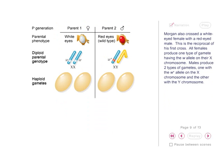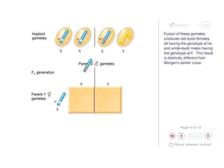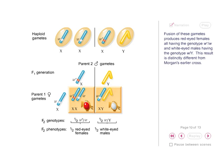Morgan also crossed a white-eyed female with a red-eyed male. This is the reciprocal of his first cross. All females produce one type of gamete having the W allele on their X chromosome. Males produce two types of gametes: one with the W+ allele on the X chromosome, and the other with the Y chromosome. Fusion of these gametes produces red-eyed females, all having the genotype W+, W, and white-eyed males having the genotype W, Y. This result is distinctly different from Morgan's earlier cross.